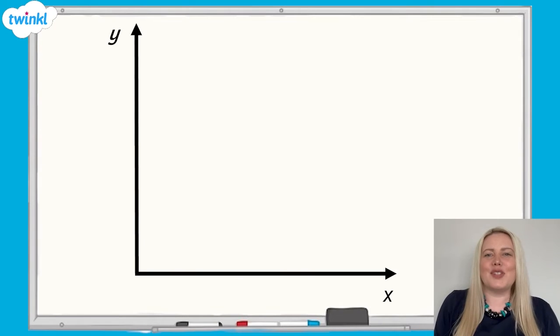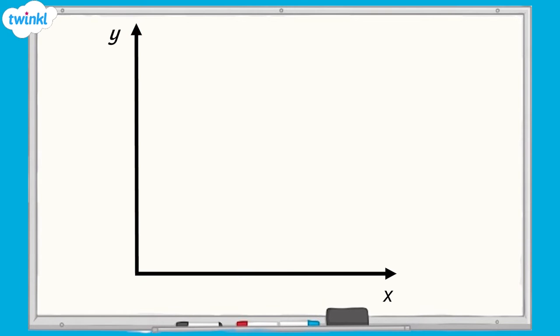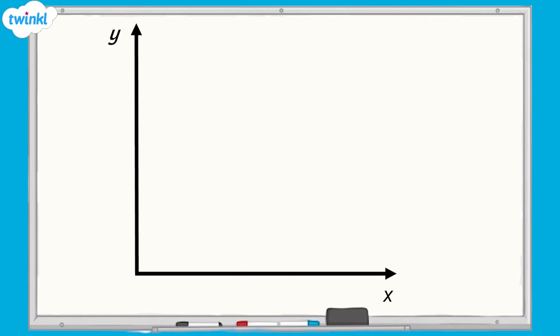Now let's look at how we find missing coordinates on a different type of coordinate grid. What do you notice that's the same and what's different about this type of grid and the ones we've already looked at? This coordinates grid doesn't have any grid lines or numbers, although it does still have both an x-axis and a y-axis. We can also see that there is only one quadrant shown. When we find missing coordinates on a grid like this, we need to have other points labelled on the grid to help us.